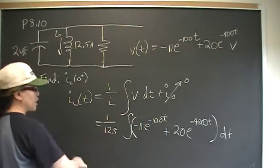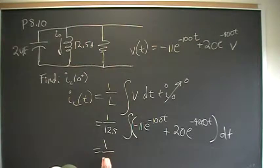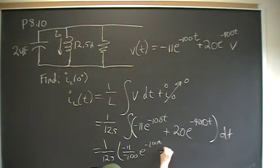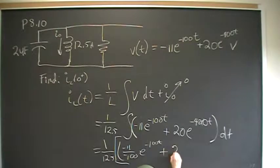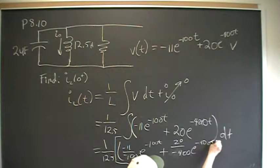Okay, you can either just straight up put that in the calculator, or you can put this into your calculator. So 1 over 12.5 times negative 11 over negative 100e to the negative 100t plus 20 over negative 400e to the negative 400t.